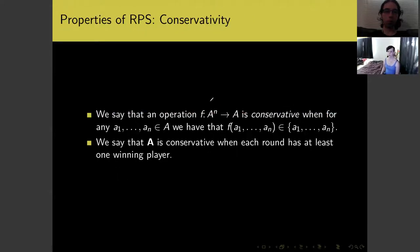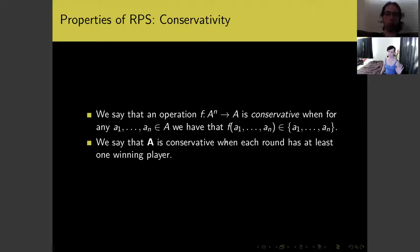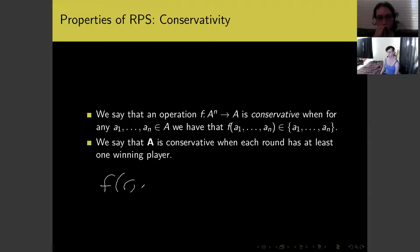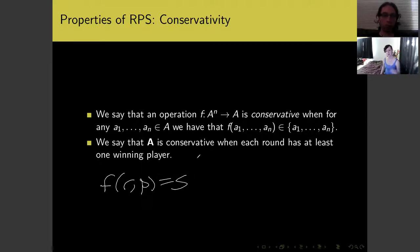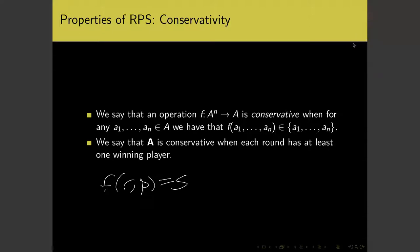The first property of rock, paper, scissors is conservativity. An n-ary operation is conservative when applying it to elements a₁ through aₙ returns one of those elements — like a₂ or a₇ — one of the things you actually plugged in. In game terms, the game is conservative when each round has at least one winning player. If F(rock, paper) were scissors, nobody would win — that's silly. You'd like at least someone to win; it's lame if everyone loses simultaneously.